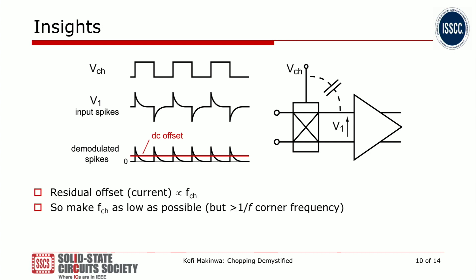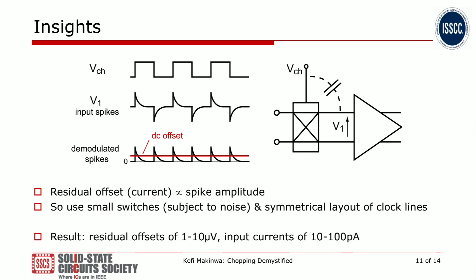Can we do something about this? Looking at our diagram, we can see that the residual offset is proportional to the chopping frequency — the more frequently these spikes come along, the larger the DC component will be. So as a design principle, we want to keep our chopping frequency as low as possible, while still making sure it's higher than the 1/f corner frequency. The residual offset and input current will also be proportional to the spike amplitude, so we want the spikes to be small. That means using small switches, subject to noise considerations, and taking great care in layout of clock lines to ensure they couple symmetrically to the input. If we do everything correctly, we can get residual offsets as low as 1 to 10 microvolts, and input currents in the order of 10 to 100 picoamps.